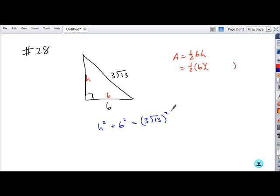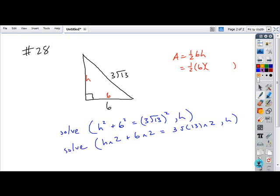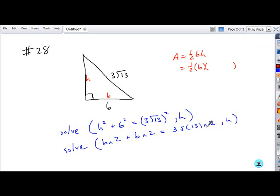And here's where the most common mistake probably comes. If you are typing this into your calculators and you enter h squared plus 6 squared equals 3 square root 13 squared comma h, this is probably the most common mistake. The reason why this is a mistake is when your calculator performs order of operations, it's going to do this power of 2 before it multiplies by 3. But really, we need this 3 to be squared as well, right?